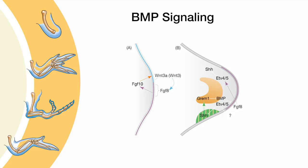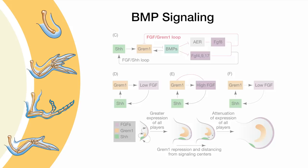Gremlin expression is upregulated by Sonic Hedgehog, and the early positive feedback loops between FGF8, Wnt3a, FGF10, and Sonic Hedgehog all lead to the continued propagation of the limb. However, as the expression of FGF8 climbs to a higher concentration, it hits a threshold for gremlin downregulation. Therefore, as the limb bud grows, gremlin expression decreases and physically becomes gradually distant from the AER, which reduces gremlin's repression of BMP, freeing BMP to inhibit FGF8, and putting the brakes on limb bud outgrowth.